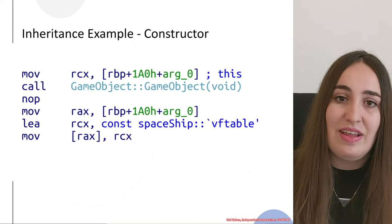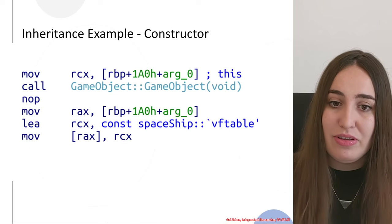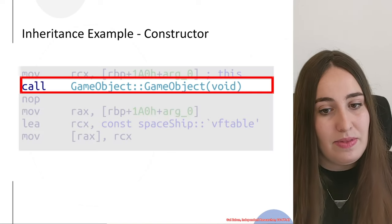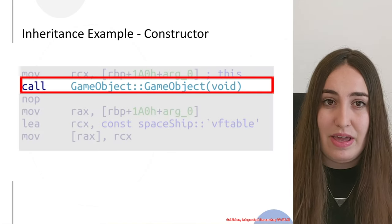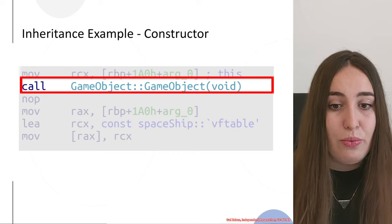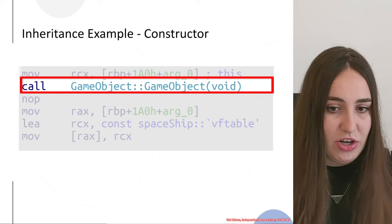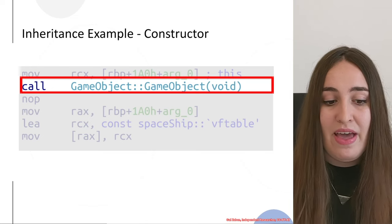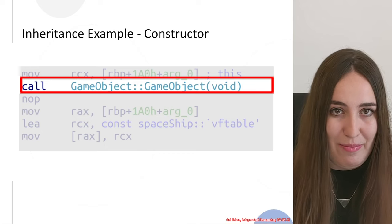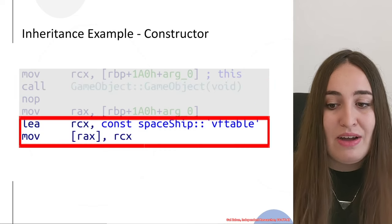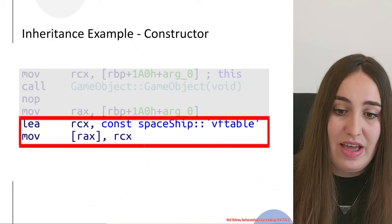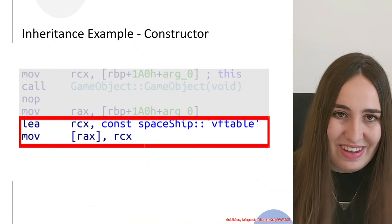To understand the relationship between the objects, we will first examine the constructor of the spaceship. We can see a call to the base class constructor — a function call inside the constructor that is unclear for now but we will examine it afterwards. Remember this game object function call. Afterwards we have the vtable set for the first 8 bytes of the object, stored in the first 8 bytes of the object structure in memory.